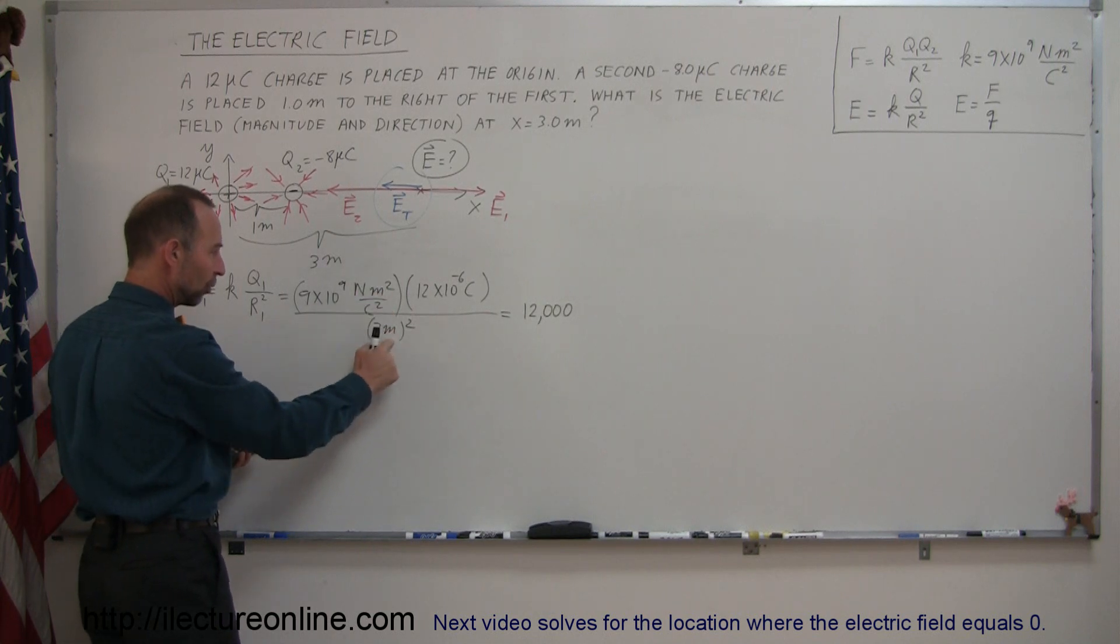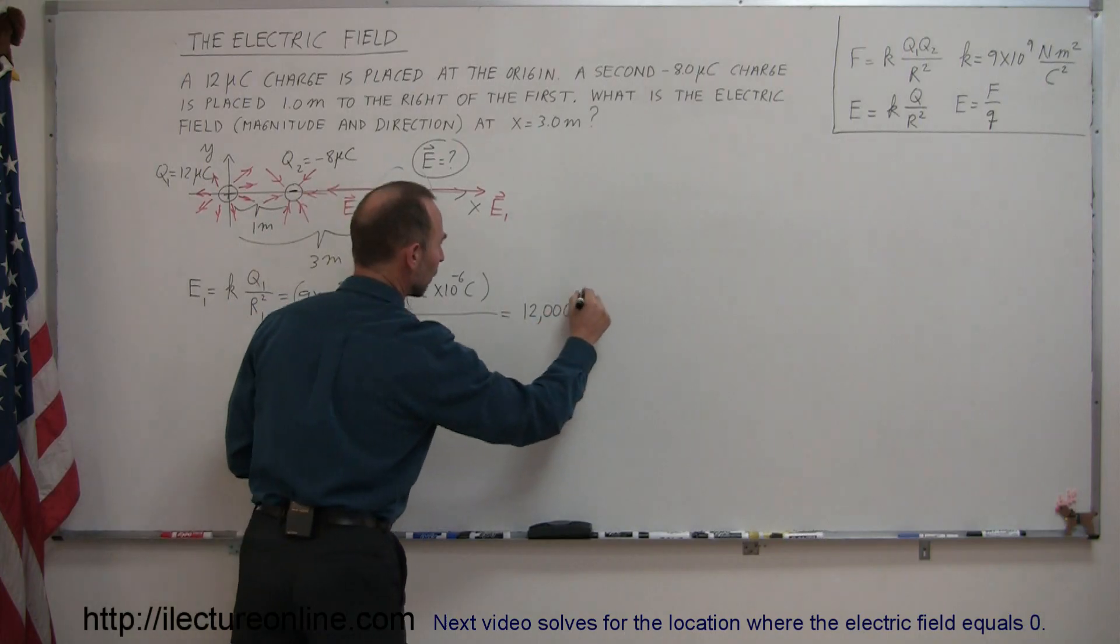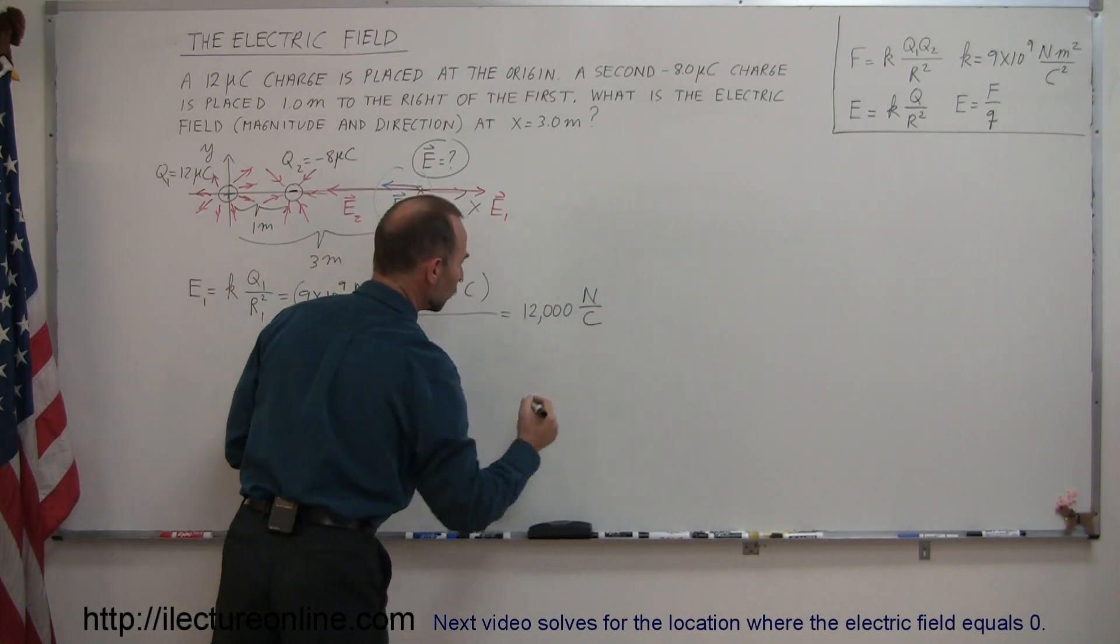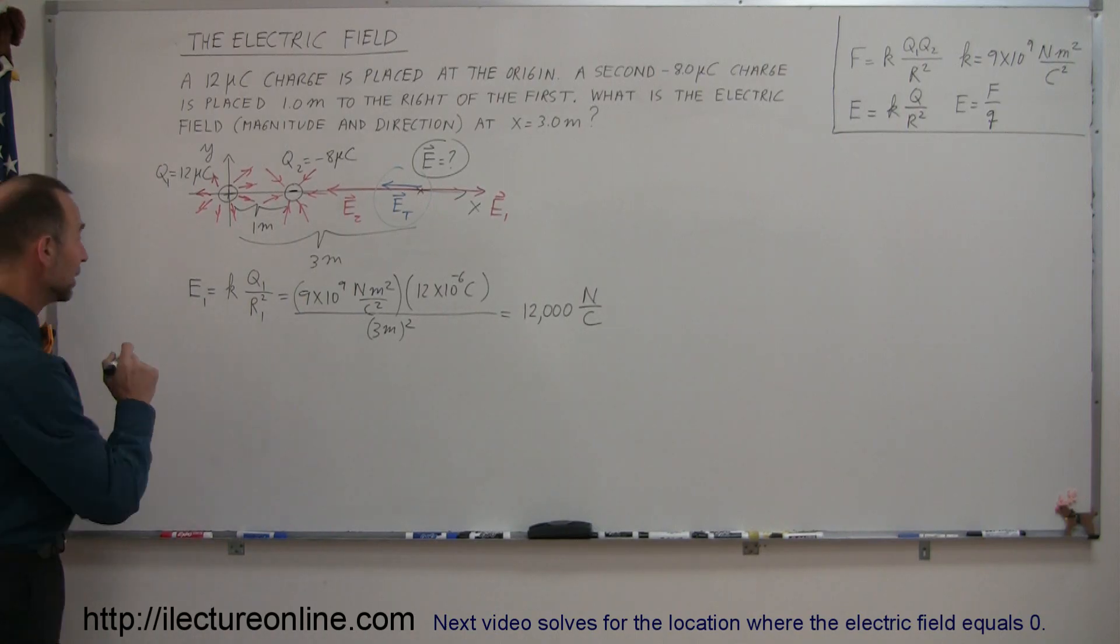So that would be 12,000. The units for electric field are newtons per coulomb. We have newtons here, meters squared cancels out, and coulombs divided by coulombs squared is divided by coulombs. So we have newtons divided by coulombs. That's the magnitude of E1. We're doing the same for E2.